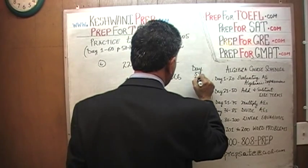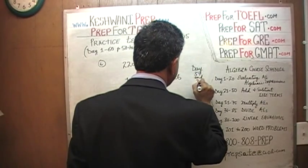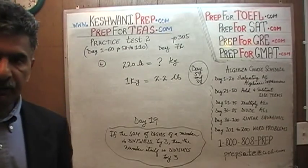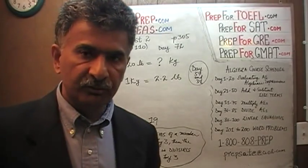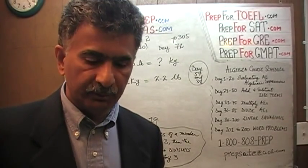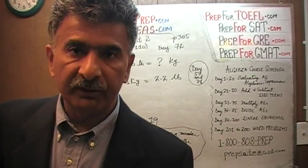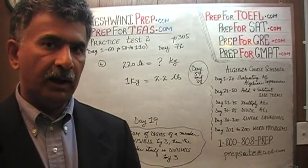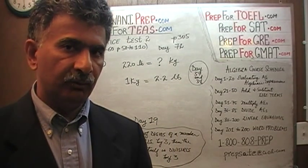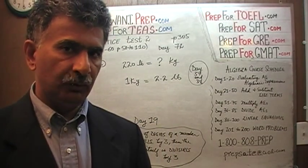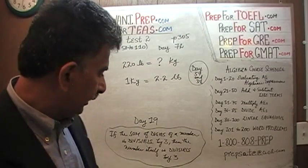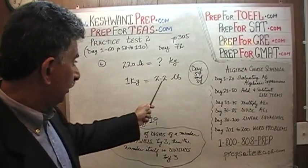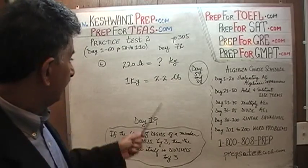We learned this on day number 37 and 38, when we discussed the units of measurements. There were some units that I told you that you have to know by heart if you're going to take this exam, and one of those facts is this one right here: 1 kilogram equals 2.2 pounds.